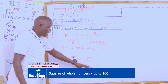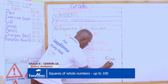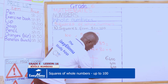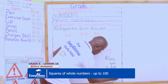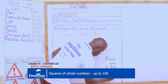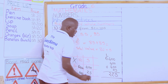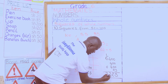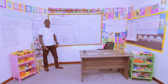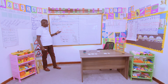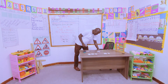Now add all four answers together: 6400 plus 400 plus 400 plus 25. Adding: 0+0+0+0+5 = 5; 0+0+0+2 = 2; 4+4+4 = 12, write 2 and carry 1; 1+6 = 7. So the square of 85 is 7225.